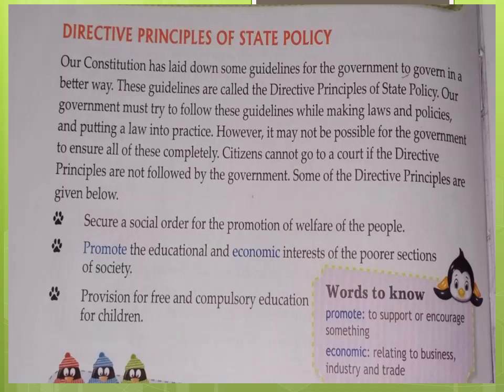Citizens cannot go to a court if the directive principles are not followed by the government. Some of the directive principles are: secure a social order for the promotion of welfare of people, promote the educational and economic interests of the poorer sections of society.